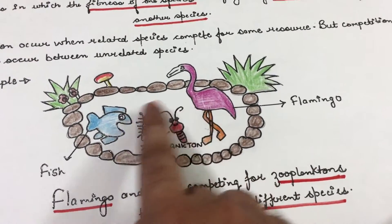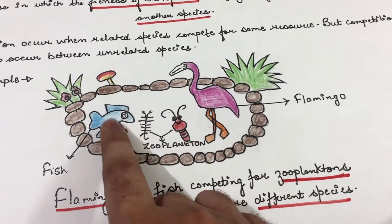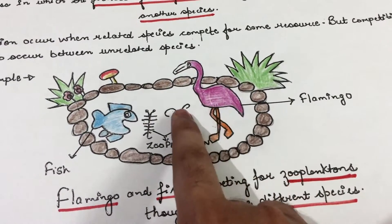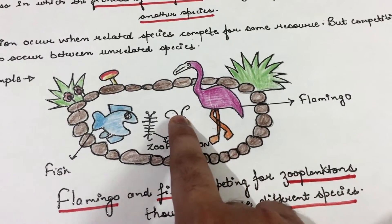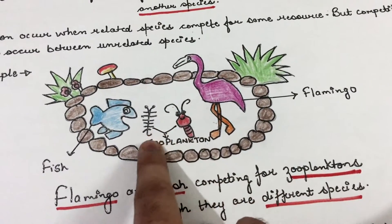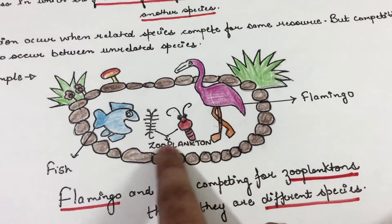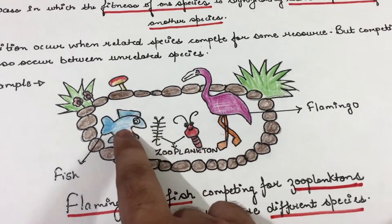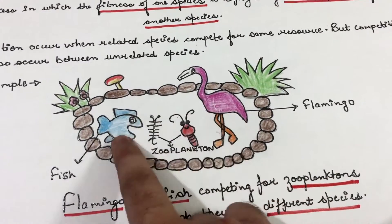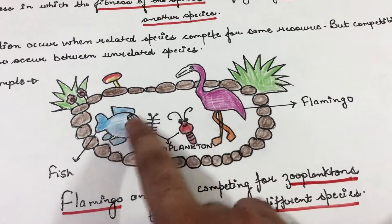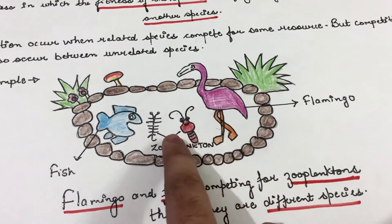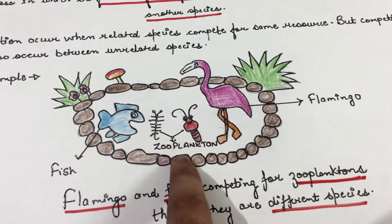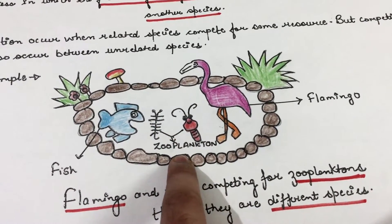For example, flamingo and fish are two unrelated species, but they compete for the same resource — that is zooplanktons.